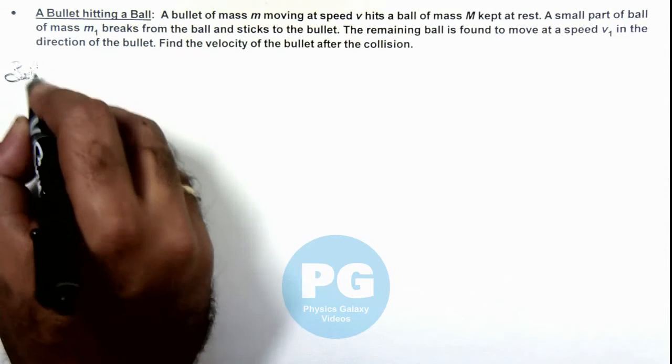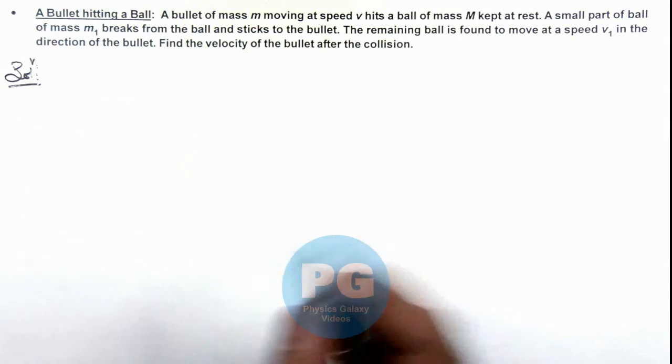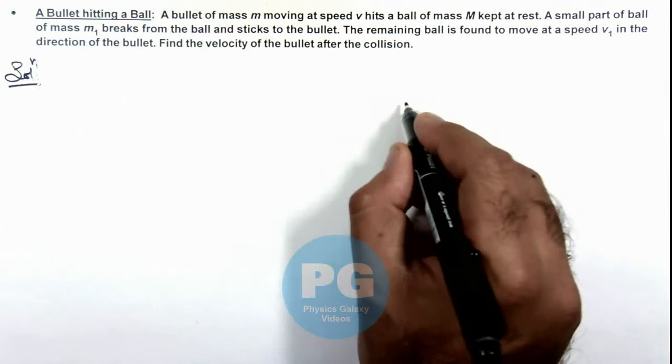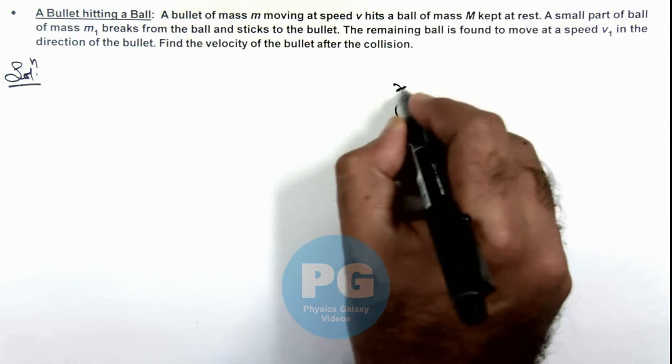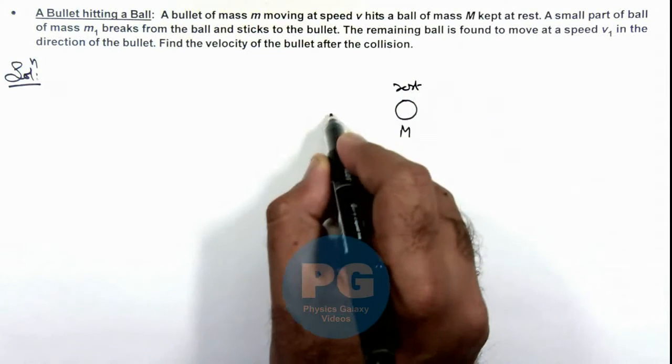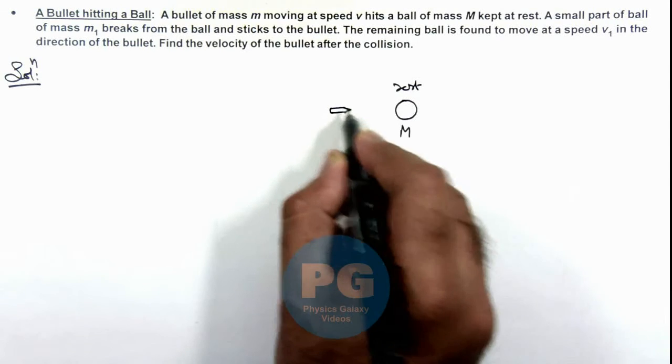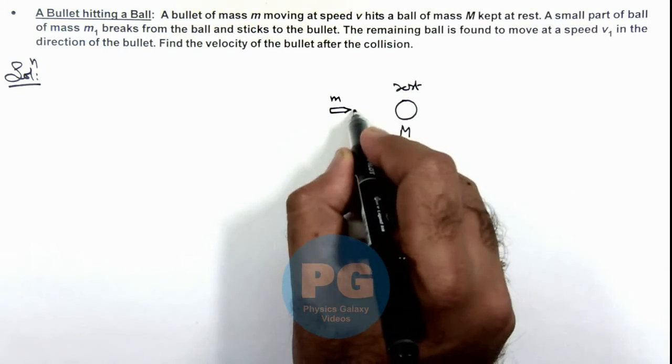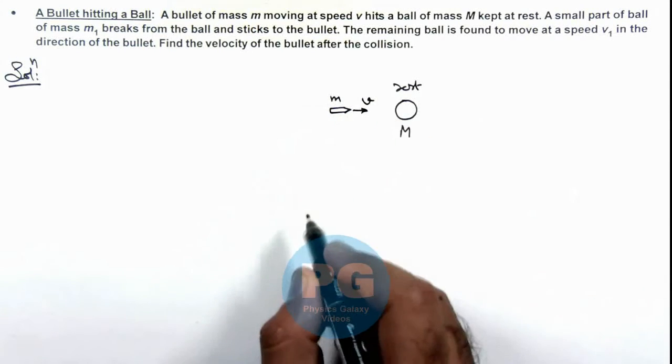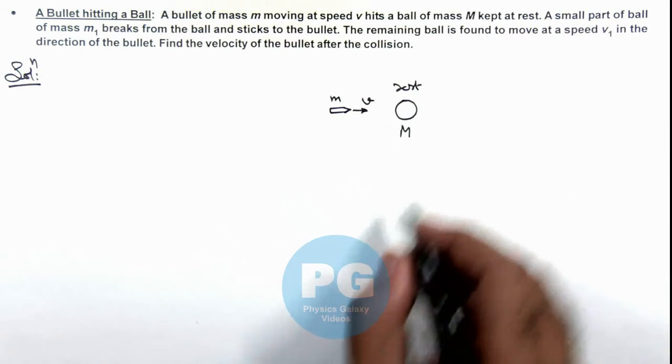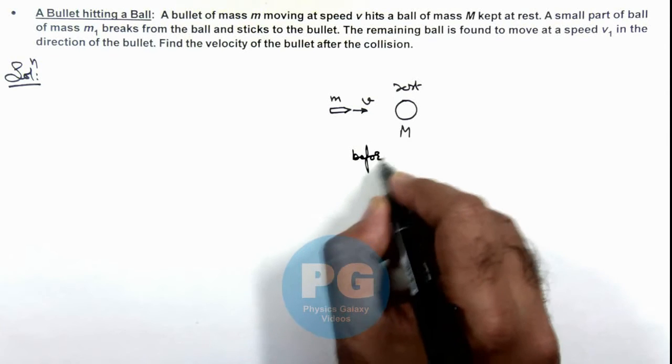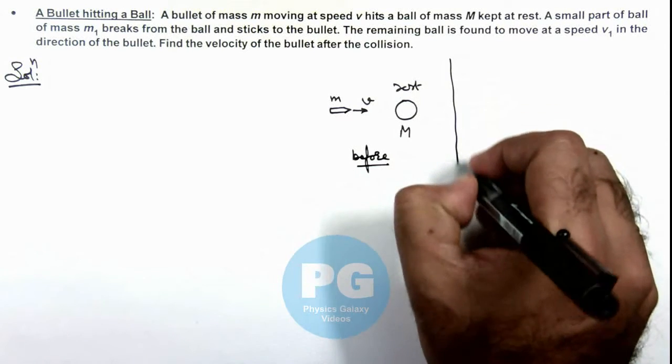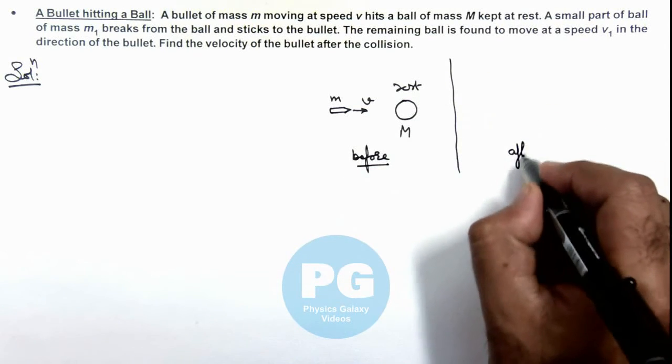To understand the situation better, let's draw a figure where we are given that there is a ball of mass M which is at rest, on which a bullet of mass m is approaching at speed v. When the collision takes place, we can write this is before collision, and here we draw the situation after collision.